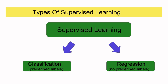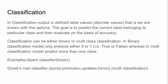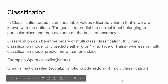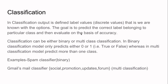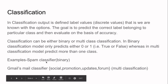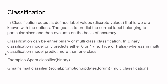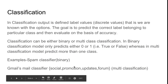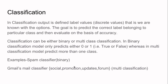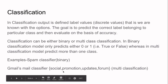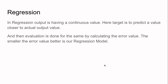Supervised learning is of two types: classification and regression. In classification, we classify what type of output it belongs to — class 1, class 2, or class 3. For example, a binary classification example is a spam classifier, which classifies whether an email is spam or not. Nowadays Gmail uses multi-class classification to classify mail into categories such as social, promotions, updates, and forums.